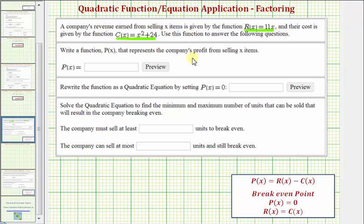So in our case, we would have P(x) equals our revenue function, which equals 11x, minus the cost function, which is equal to the quantity x² + 24.